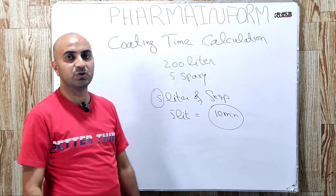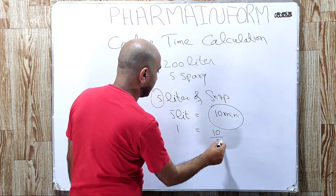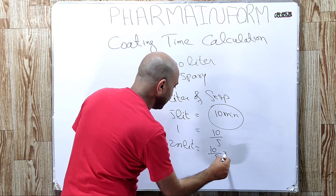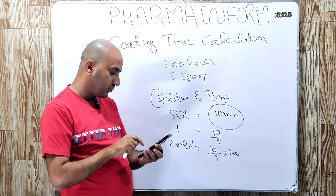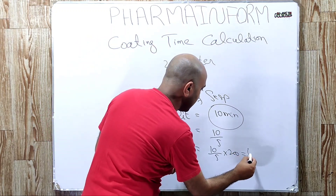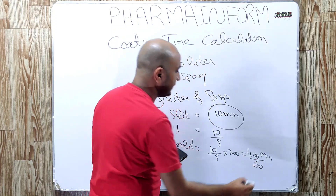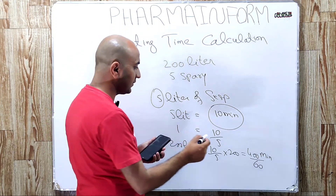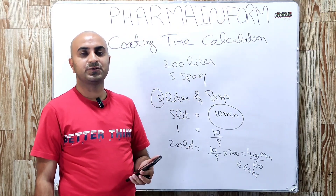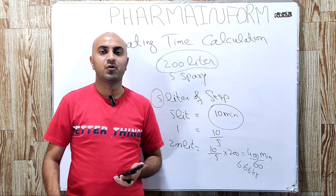We will use the unitary rule to calculate the time. For 1 liter it will be 10 over 5, and for 200 liters it will be (10/5) × 200. Using a calculator: (10/5) × 200 = 400 minutes. We convert to hours by dividing by 60, giving 6.66 hours. So it will take 6.66 hours to spray 200 liters of suspension over the tablets.